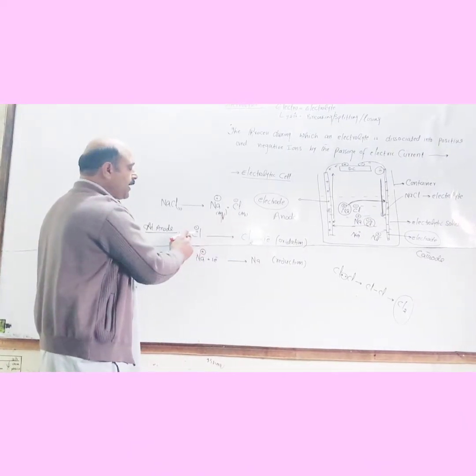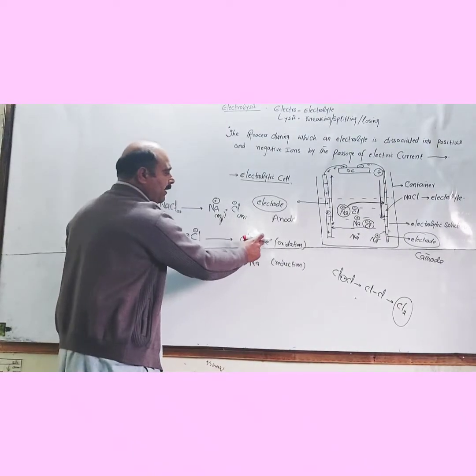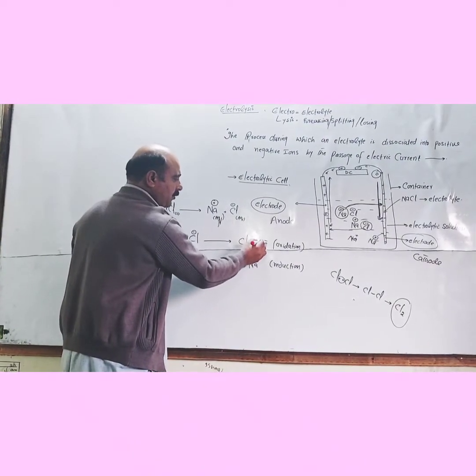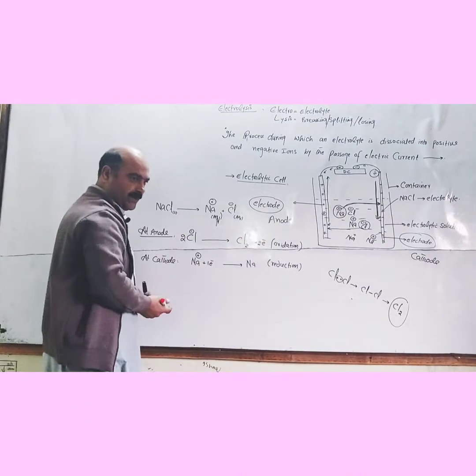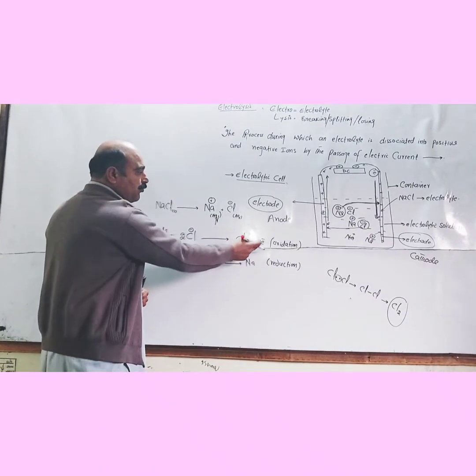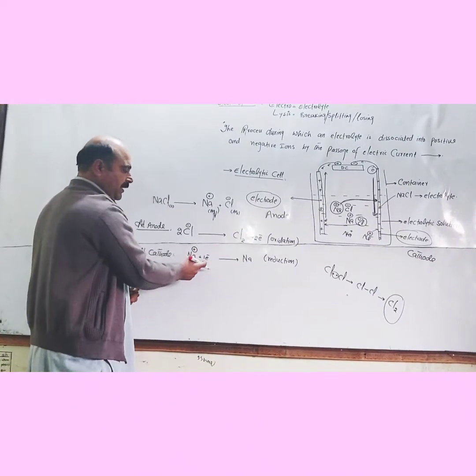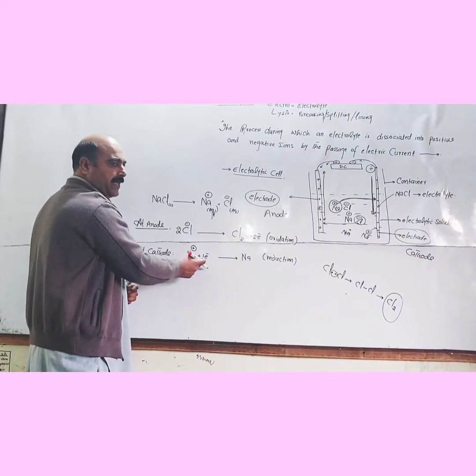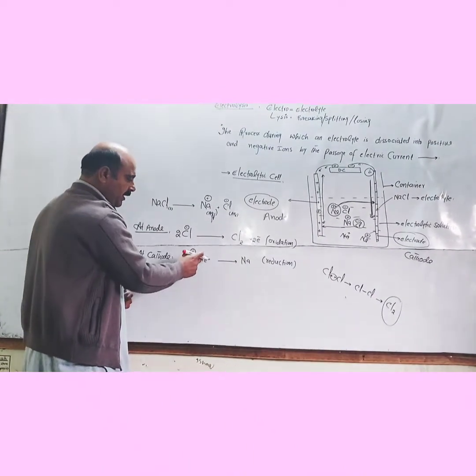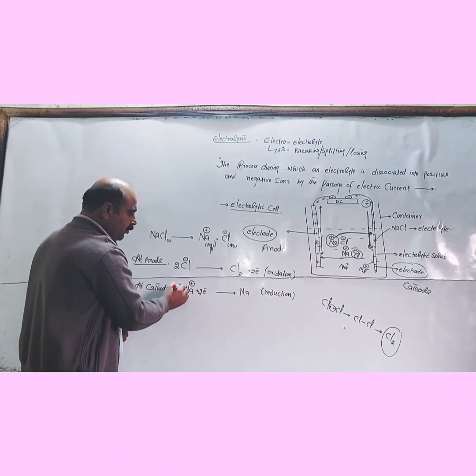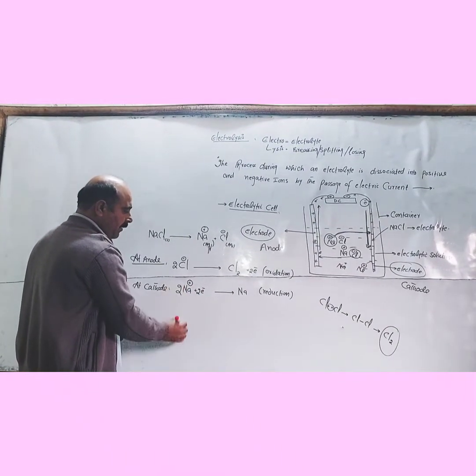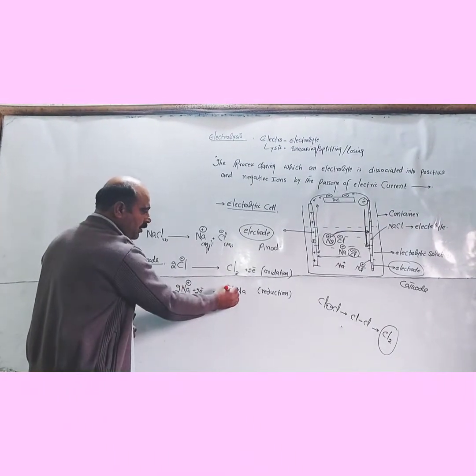Each chloride ion loses an electron. Two chloride ions lose two electrons total. The two electrons lost are then available for the sodium ions at the cathode, which gain those electrons.